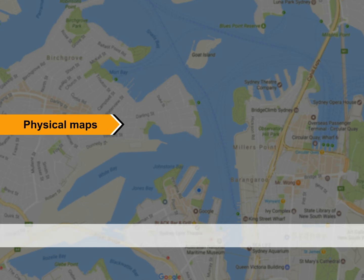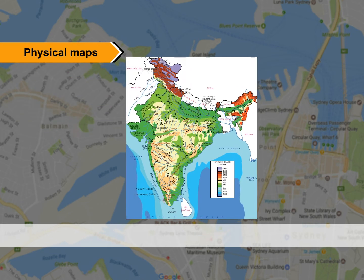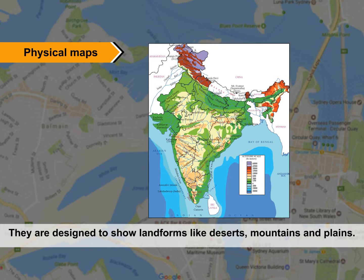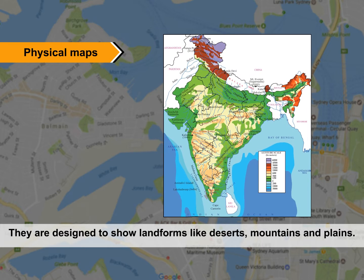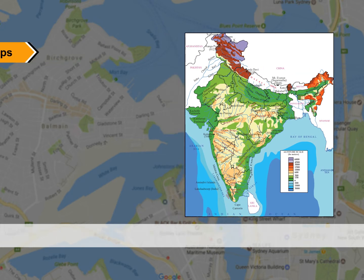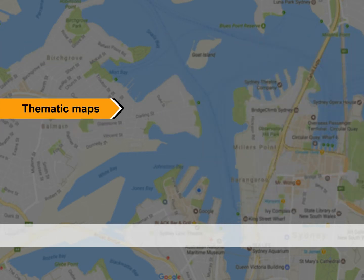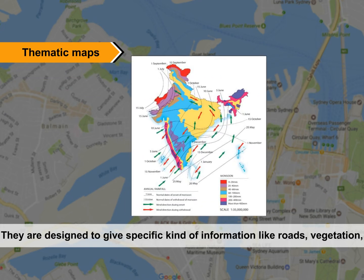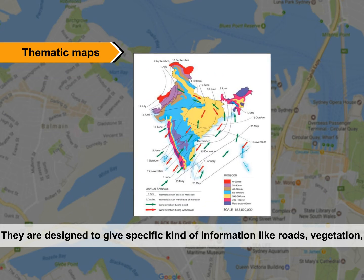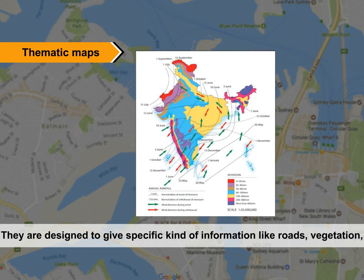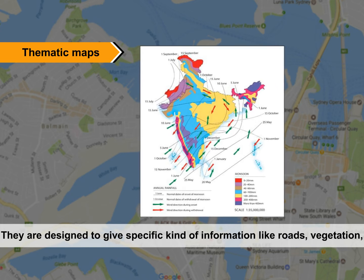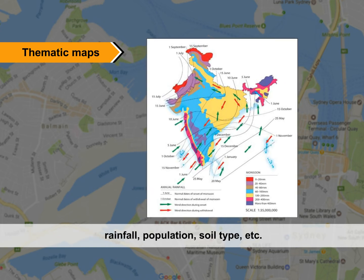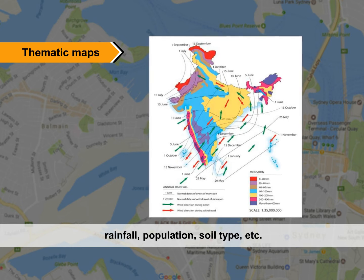Physical Maps: They are designed to show landforms like deserts, mountains, and plains. Thematic Maps: They are designed to give specific kinds of information like roads, vegetation, rainfall, population, soil type, etc.